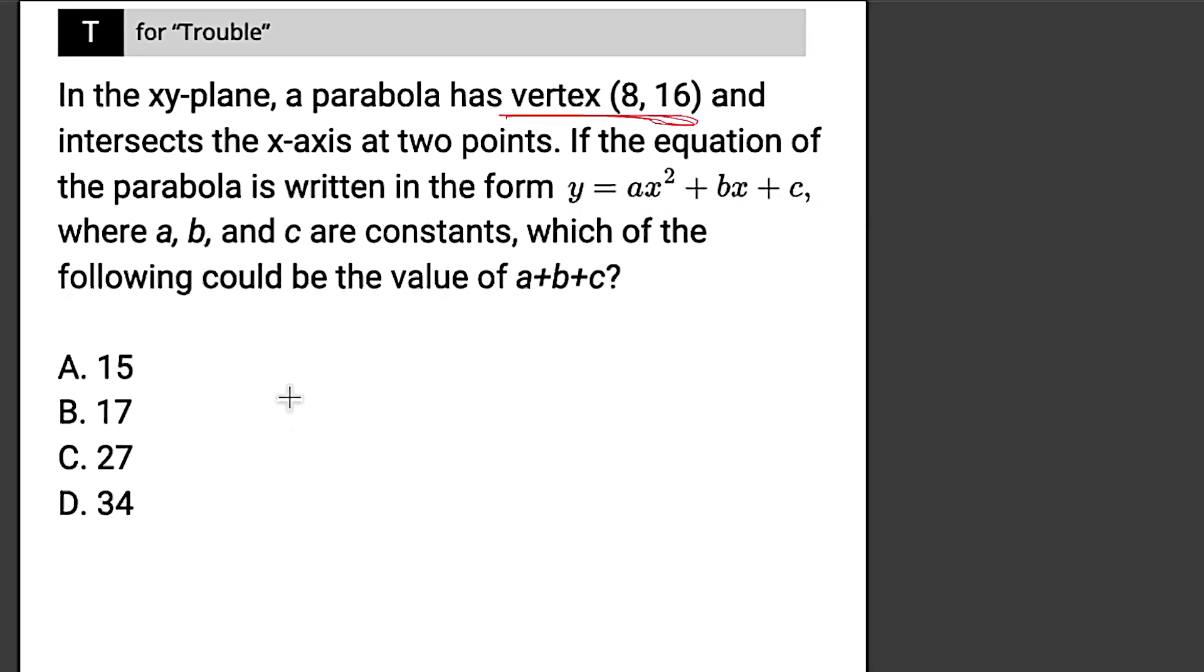Another form would be factored form. And this is something that you are probably familiar with because we're going to have y equals x minus p times x minus q. And this is often where we find ourselves when we're trying to solve for x-intercepts because factored form shows us the x-intercepts as p and q.